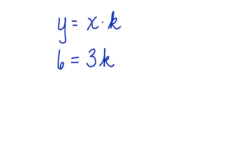Here we have a simple equation. Remember y was equal to 6, we've substituted that in, and x was equal to 3. Now we can solve for k. We divide both sides by 3, and we can say that 2 is the constant of proportionality.